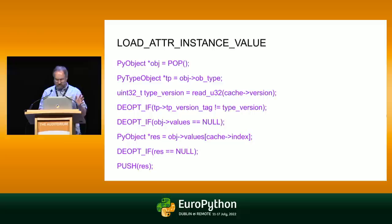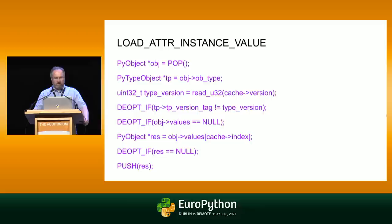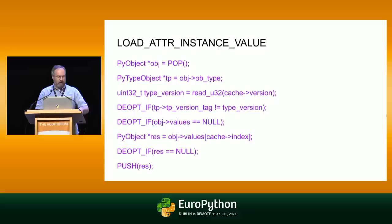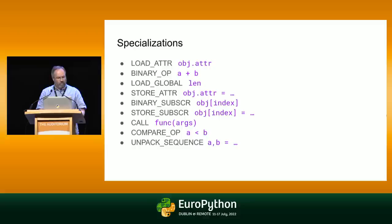Here's how load-attribute-instance-value works in C code. We pop the object off the top of the stack, look at its type, and check the type version against the cached value. If they don't match, we deopt — decrement the counter and fall back to the general form. If we don't deopt, we read out the index and we're done. There are a few memory reads here, but most are independent — there's only one dependent read. This is much simpler and faster than the more general case.